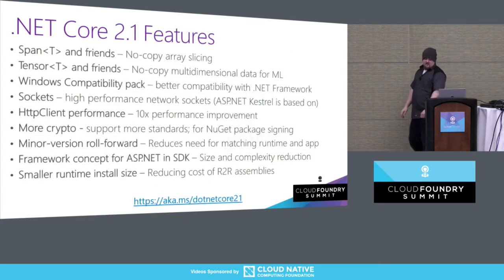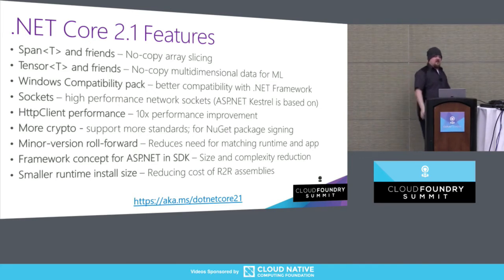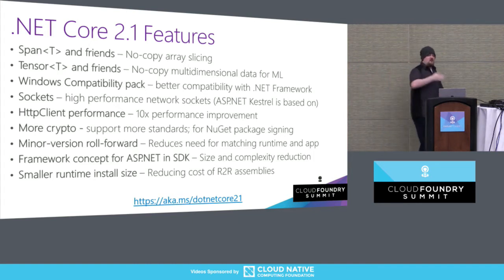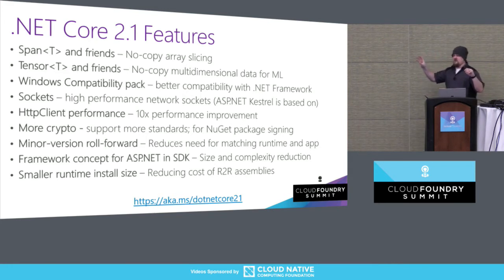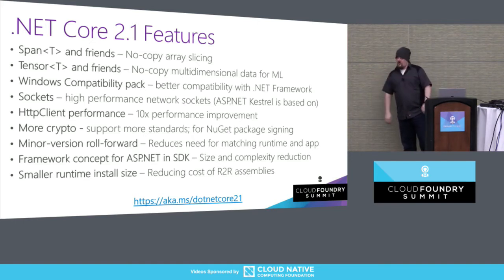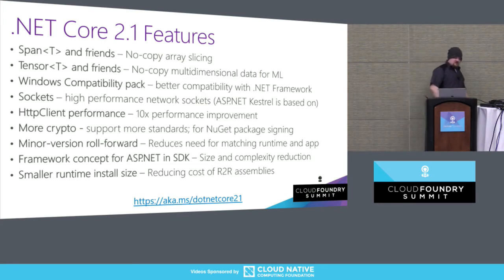Here's a big laundry list of things we're doing. Span<T> and Memory<T> we talked about. There's Tensor<T> — starting to build AI concepts into the framework. We have Windows compatibility packs: packages you install that give you more of the APIs you had on .NET Framework. They'll typically only work on Windows, but they let you take a .NET Core app and say 'I'm okay with Windows-only' so you can keep porting. They're not part of Core itself because Core has to be cross-platform.